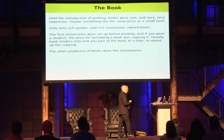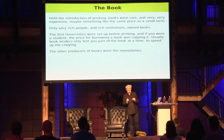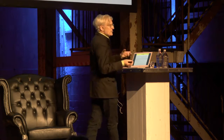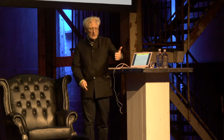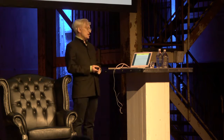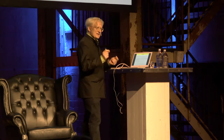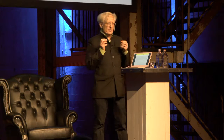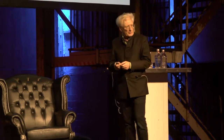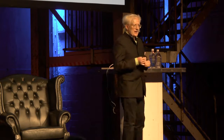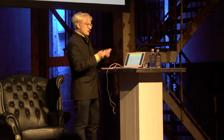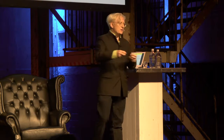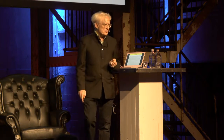Until the introduction of printing, books were really, really rare — mostly because they were really, really expensive. A book cost approximately the same price as a small farm. So only extremely rich people and rich institutions had books. The first universities were set up before printing, and if a student wanted to read a book, they had to borrow it, and the price of borrowing was copying it. Book lenders would say, 'You can borrow it, but you've got to copy it for me — you've got two weeks.' They'd only give you a little bit at a time, so you'd read it, copy it out, take it back, and get the next bit.